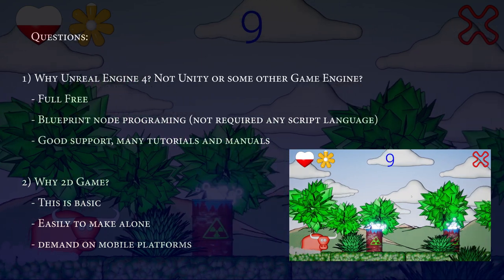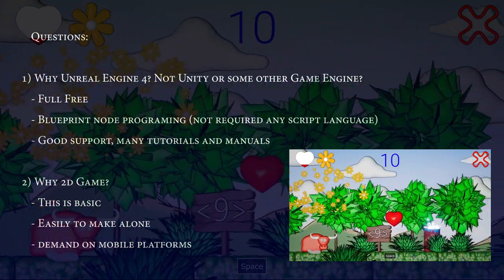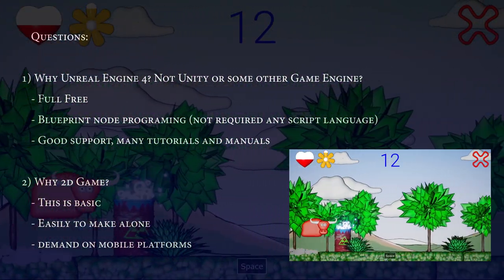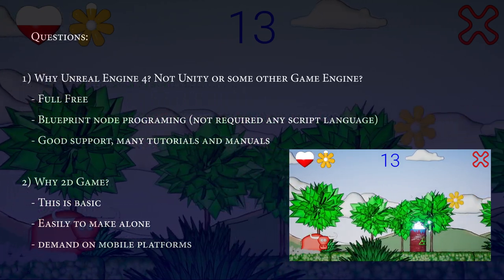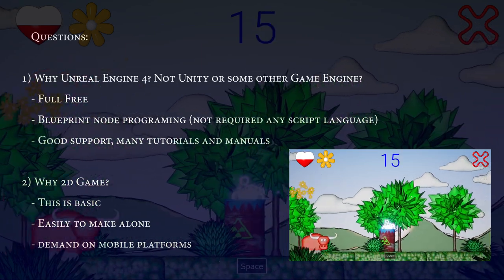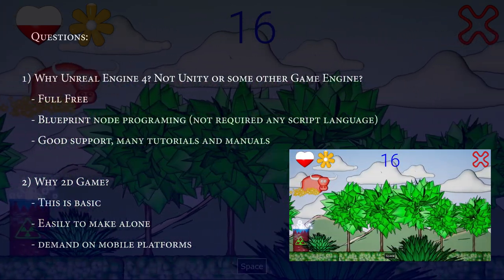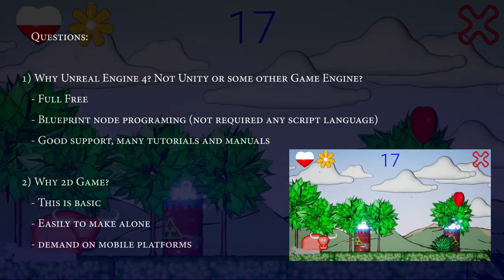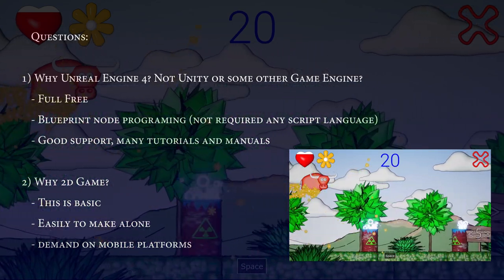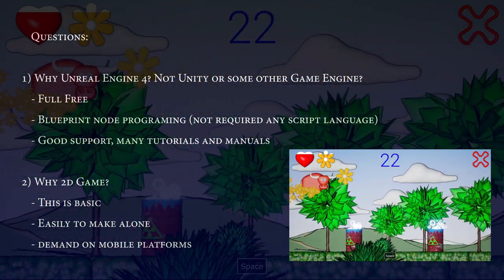You might ask why I'm creating a 2D game. Of course it covers the basics — if you know how to create a 2D game, you understand the basic ideas of how to use Unreal Engine 4. A 2D game is also very easy to make alone, even if you don't have a team. And finally, 2D games are very much in demand on mobile platforms, so in the future you can upload your game to the Play Store or the iOS App Store and potentially earn some additional money.